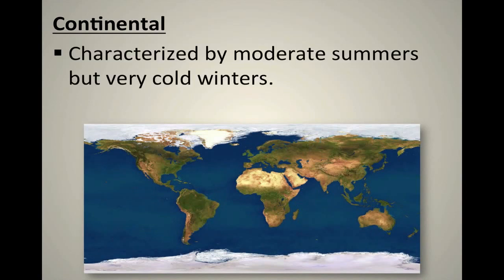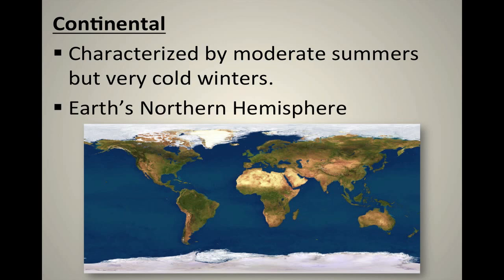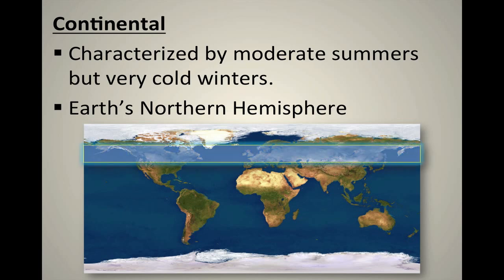Continental climate is characterized by moderate summers — it's pretty similar to temperate climates except for its winters. Springs and falls are normal with moderate, average temperatures. However, it gets very cold during wintertime with lots of snow on the ground for months and months. They actually have blizzards — here in Little Rock we don't get blizzards, but continental climates do. It's located in Earth's northern hemisphere, right below the polar regions and right above the southern United States and the Mediterranean Sea.